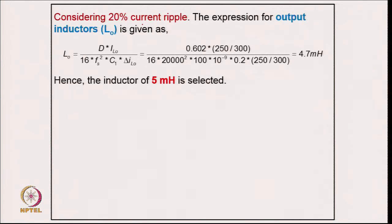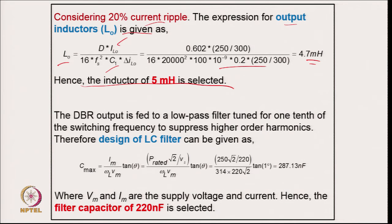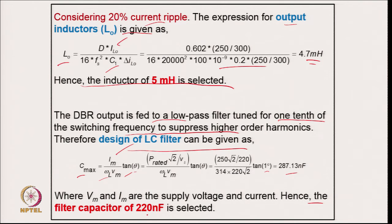The output inductor for the Luo converter is designed with 20 percent ripple. The expression for the output inductor gives 4.7 mH; to ensure continuous conduction with less than 20 percent ripple, 5 mH is selected. For the AMI filter capacitor, using the relation with supply peak voltage, peak current, supply frequency, and θ = 1 degree gives 287.13 nF. A slightly lower value of 220 nF is selected.